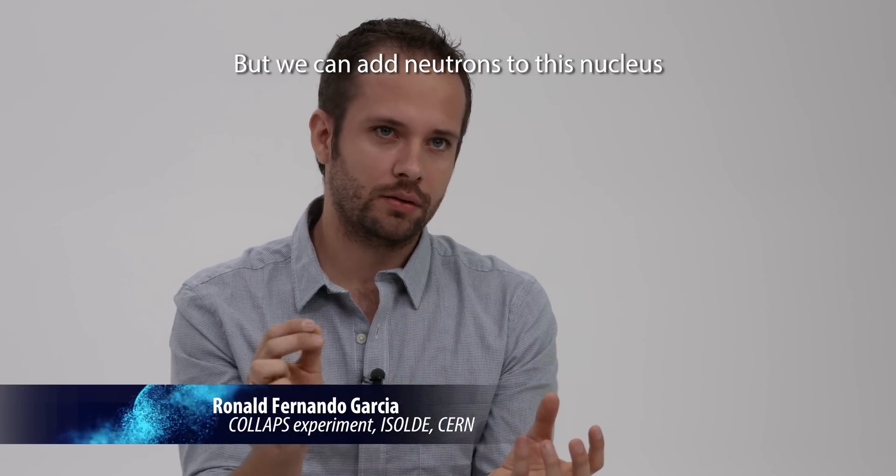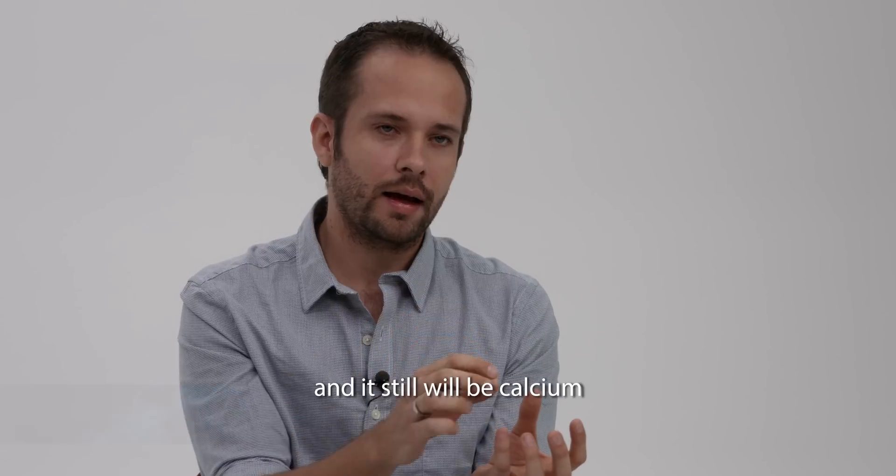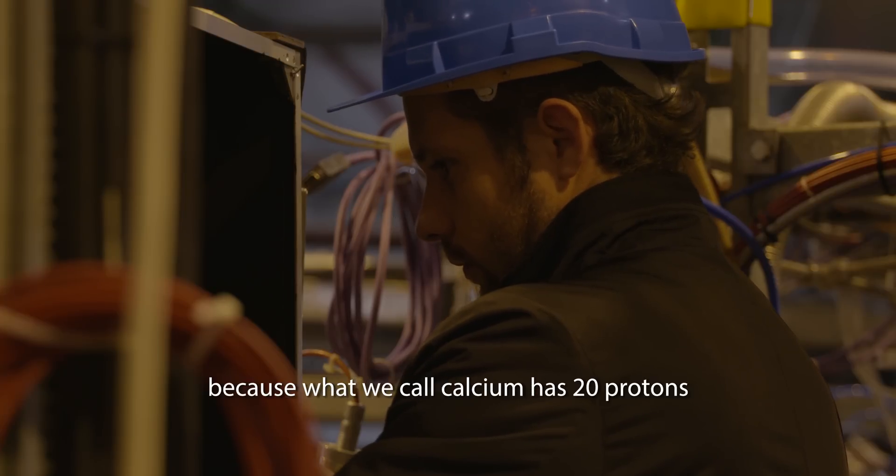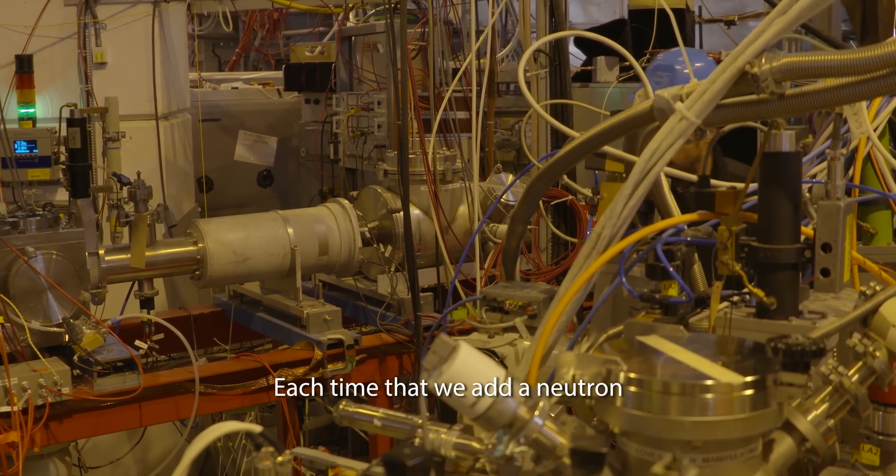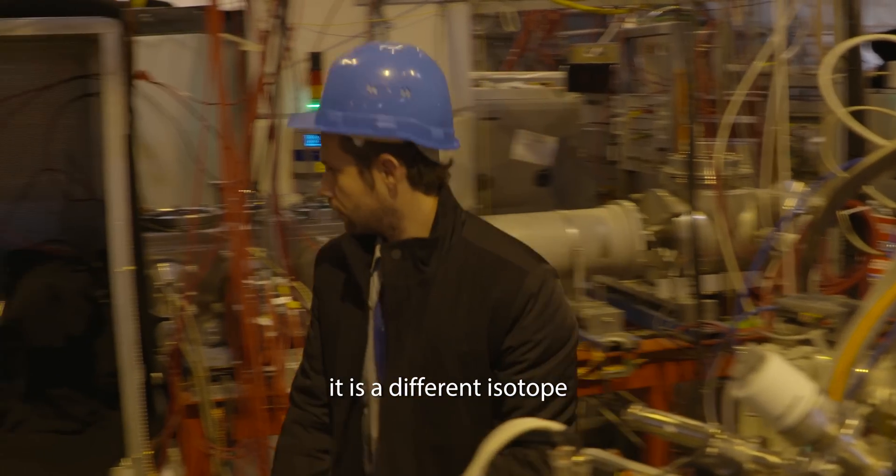But we can add neutrons to this nucleus, and it still will be calcium because what we call calcium is because it has 20 protons. Each time we add a neutron, it is a different isotope.